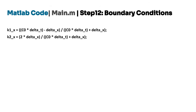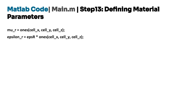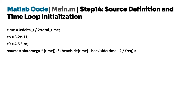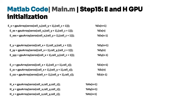Step 12 sets up second-order Mur's absorbing boundary condition (ABC) coefficients k1_x and k2_x, which help absorb outgoing waves and prevent reflections at the boundaries. Step 13 initializes the relative permeability mu_r and permittivity epsilon_r as ones across the simulation space, indicating that the material is air or vacuum. Step 14 defines the source signal as a sinusoidal wave with a specific frequency. Step 15 initializes arrays for the electric fields (e_x, e_y, e_z) and magnetic fields (h_x, h_y, h_z) on the GPU for faster computation. Step 16 is the main time-stepping loop for updating the electric and magnetic fields based on Maxwell's equations, iterating over time steps and updating field values for each cell in the grid.